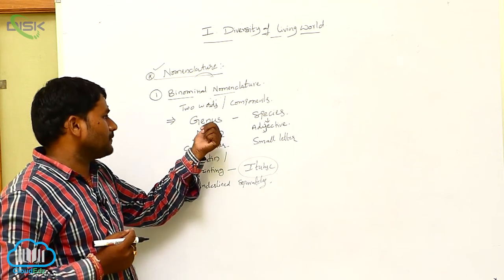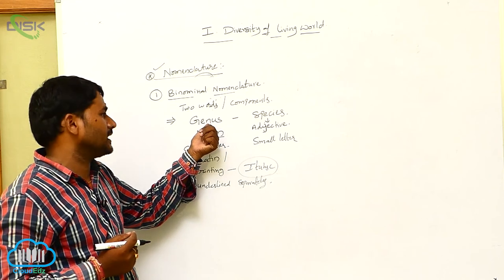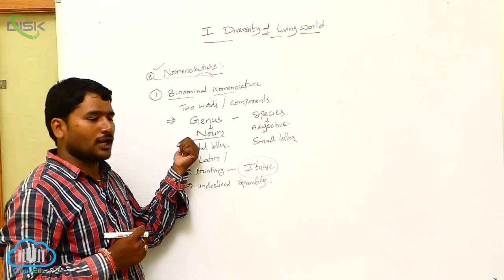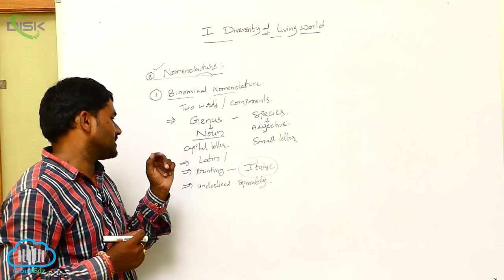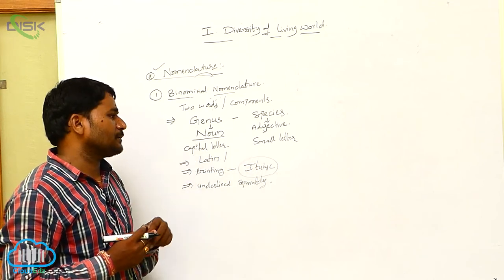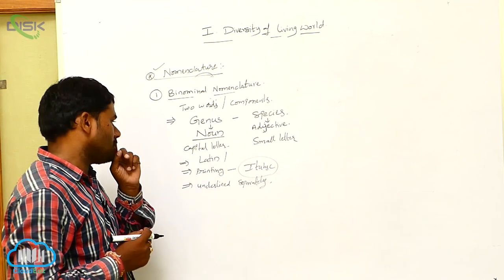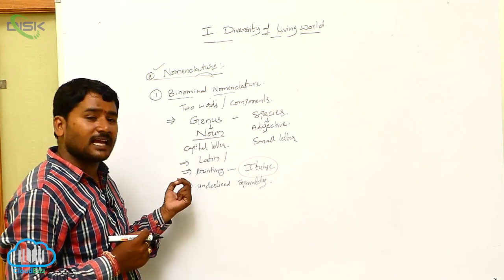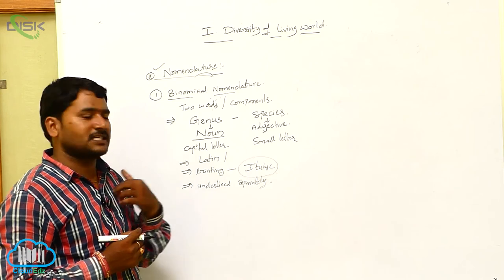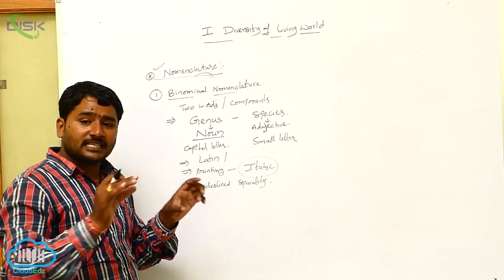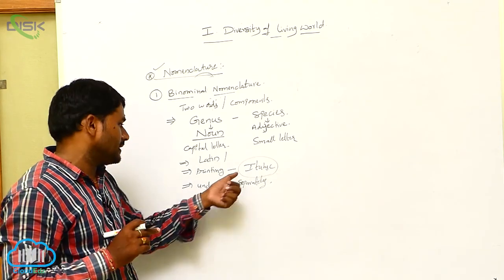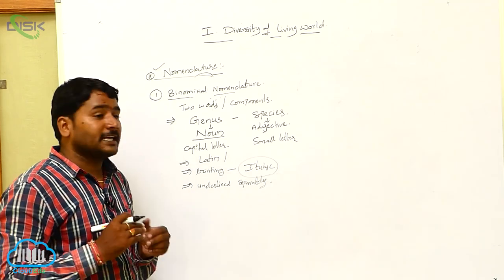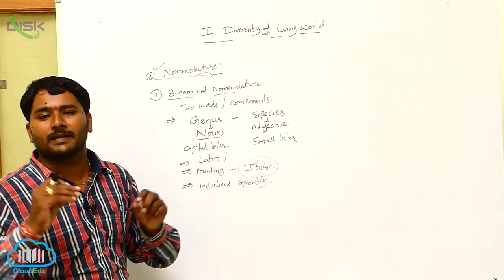To summarize: the first word in the scientific name is genus, the second word is species. Genus is a noun, species is an adjective. Genus starts with a capital letter and species starts with a small letter. The scientific name should be taken from Latin or Latinized forms. When writing the scientific name, it must be printed in italic type, and when writing it by hand, each word must be underlined separately.